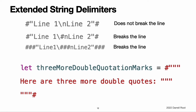Extended string delimiters. You can place a string literal within extended delimiters to include special characters in a string without invoking their effect. You place your string within quotation marks and surround that with number signs. For example, printing this string literal prints the line feed escape sequence rather than printing the string across two lines. If you need the special effects of a character in a string literal, match the number of number signs within the string following the escape character. For example, if this is your string and you want to break the line, you can use this instead. Similarly, this example also breaks the line.